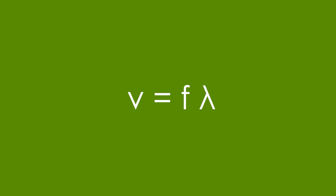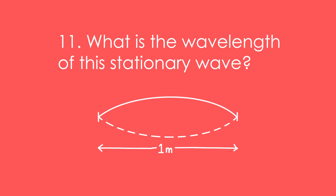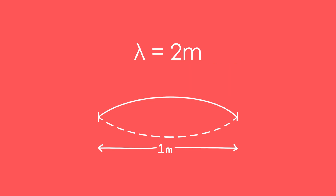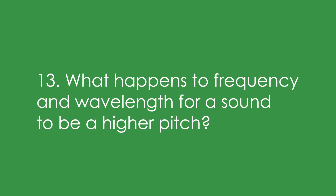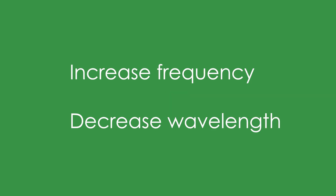You might see it as C equals F lambda. 11. What is the wavelength of this stationary wave? It's two meters because we only have half a wavelength on the string. 12. What do you change to make a sound louder? You increase the amplitude. 13. What happens to frequency and wavelength for a sound to be a higher pitch? You increase the frequency and decrease the wavelength.